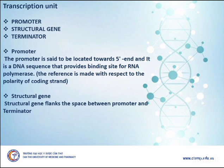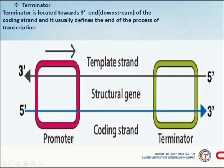A transcription unit includes a promoter, structural gene, and terminator. The promoter is located towards the 5' end and is the DNA sequence that provides a binding site for RNA polymerase. The structural gene flanks the space between the promoter and terminator. The terminator is located towards the 3' end, downstream of the coding strand, and defines the end of the transcription process.